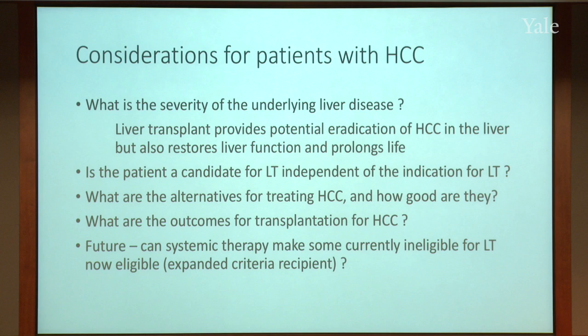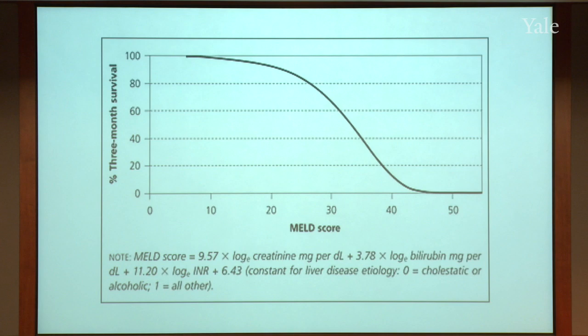Back a number of years ago, allocation for liver transplant changed from just time on a wait list to try to rescue those who were the most ill. We went to a system called MELD allocation — Model of End-Stage Liver Disease — an objective criteria now modified to also include sodium, which takes into account advanced portal hypertension as well.